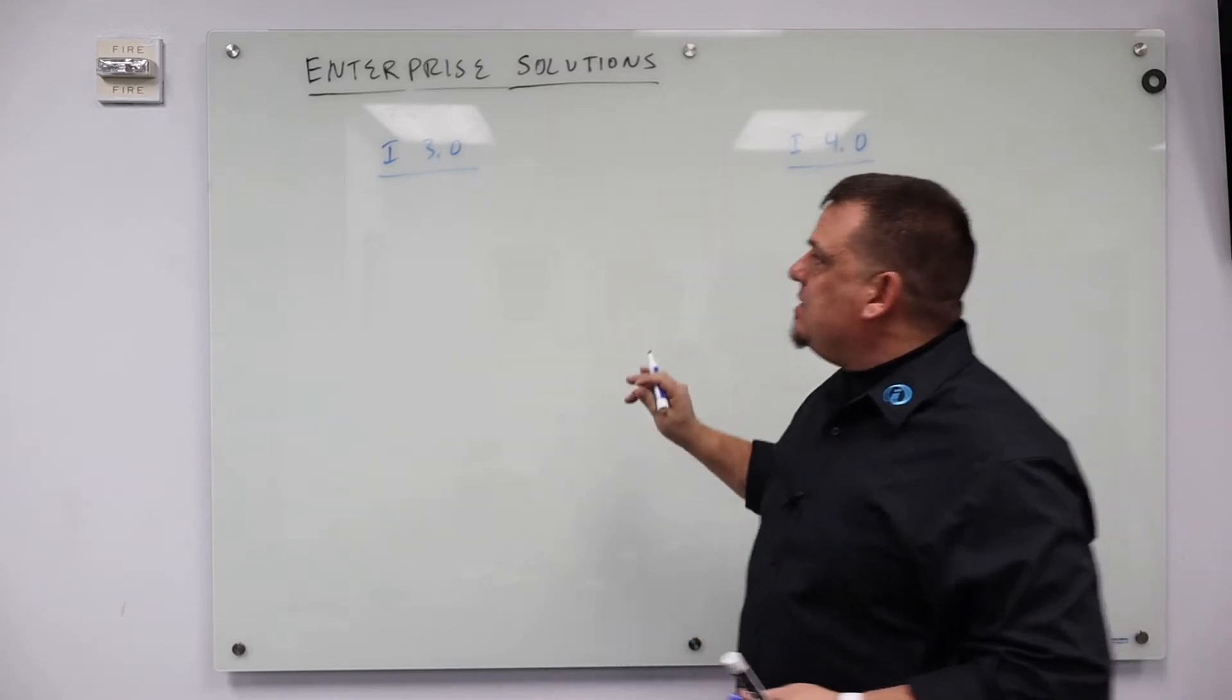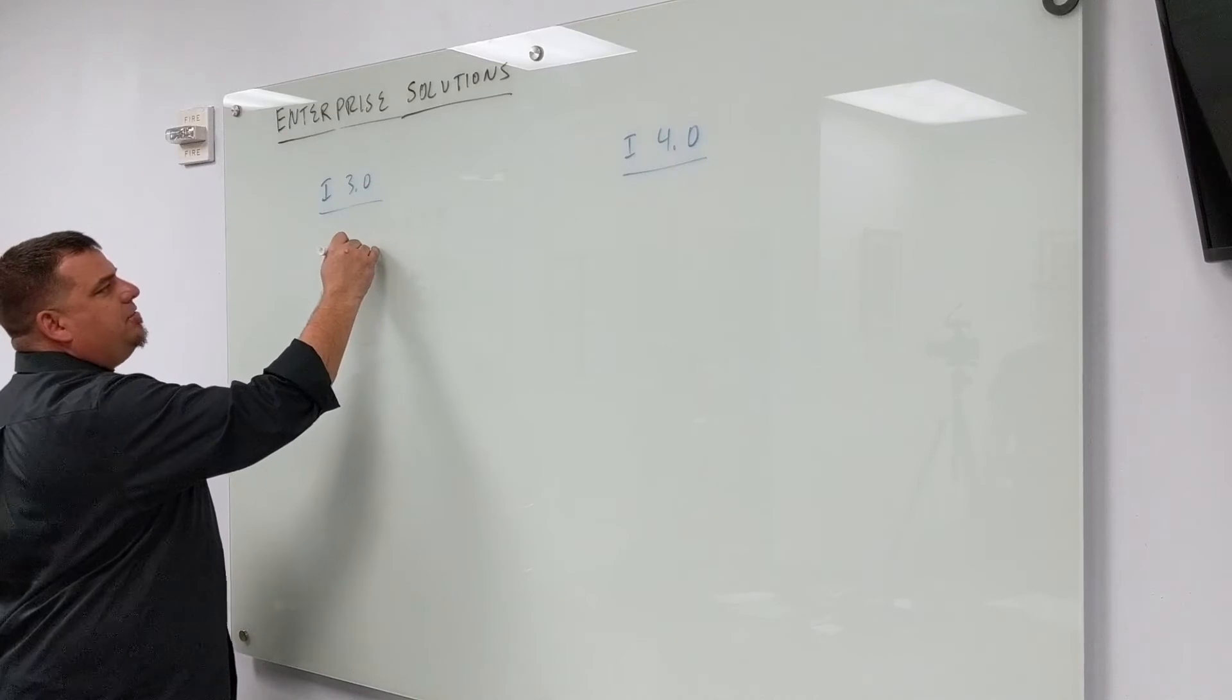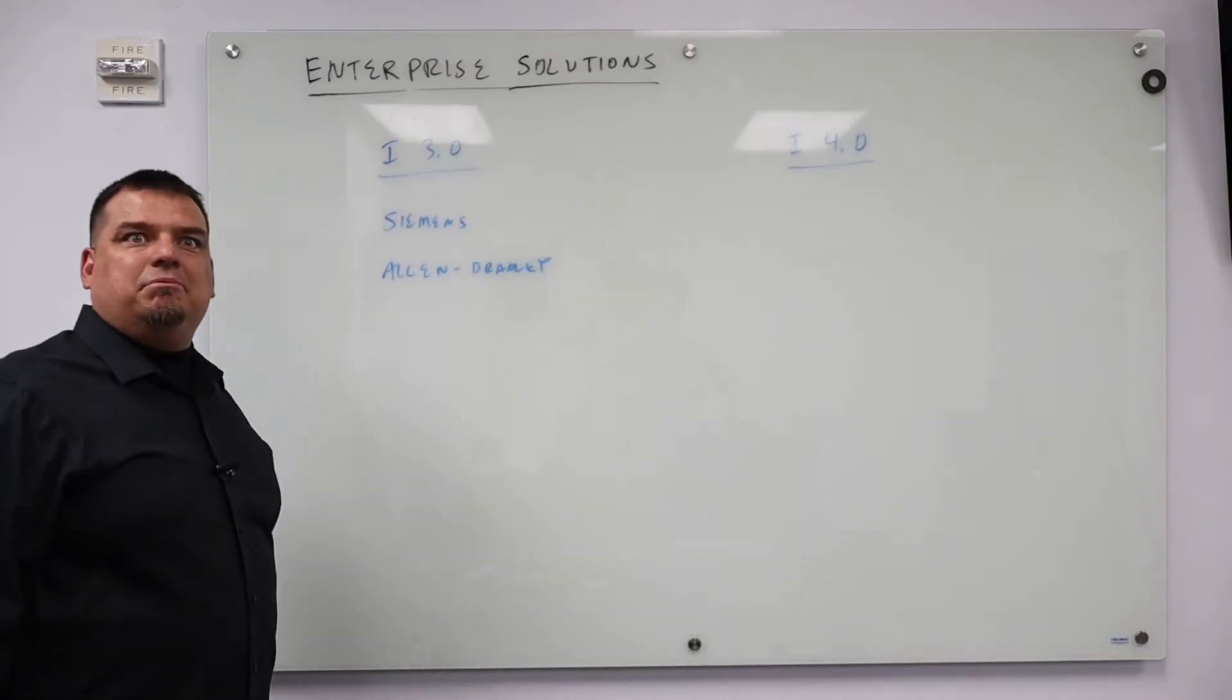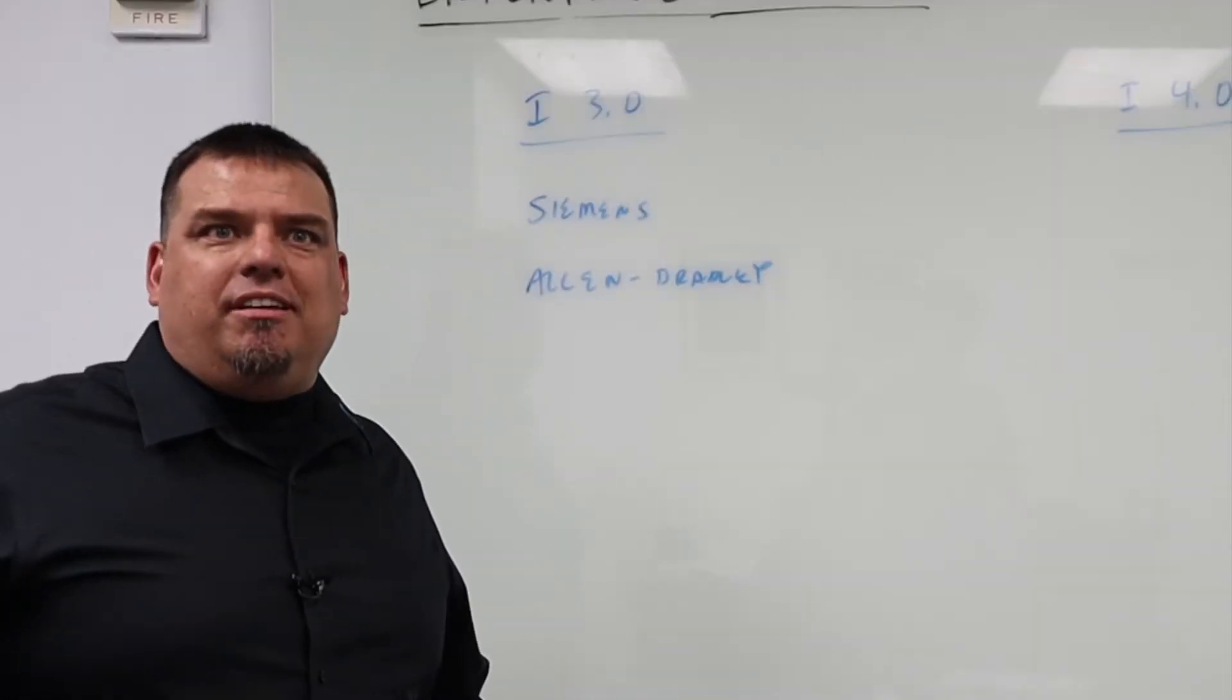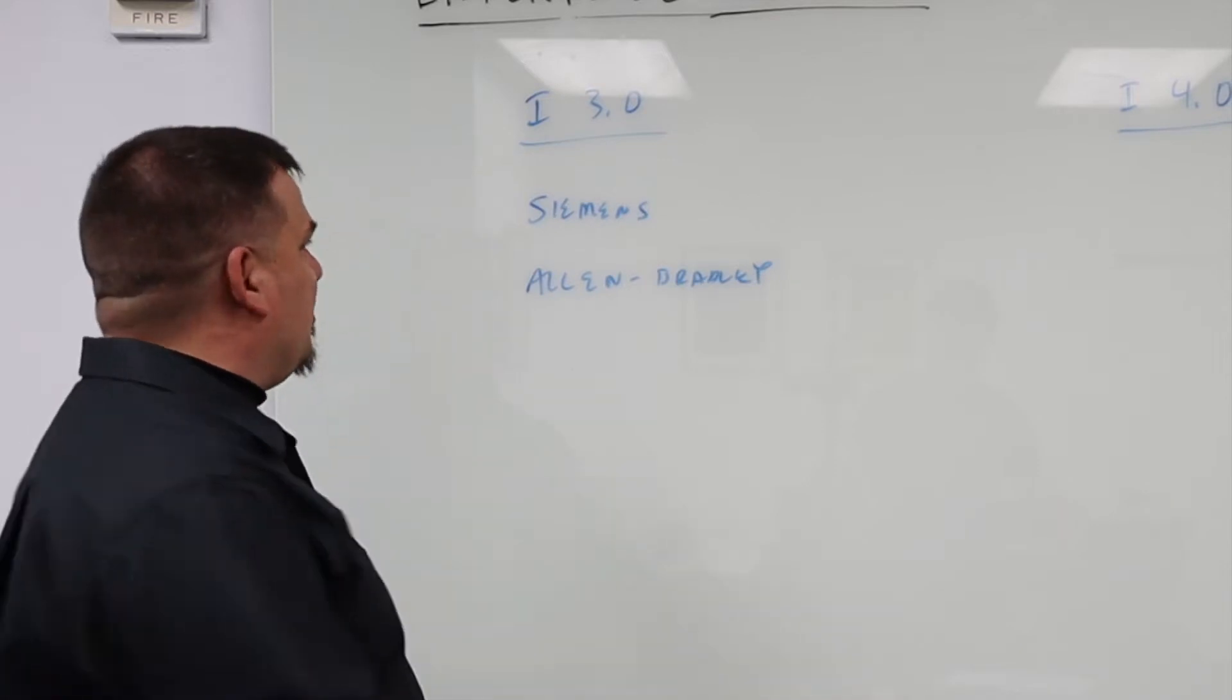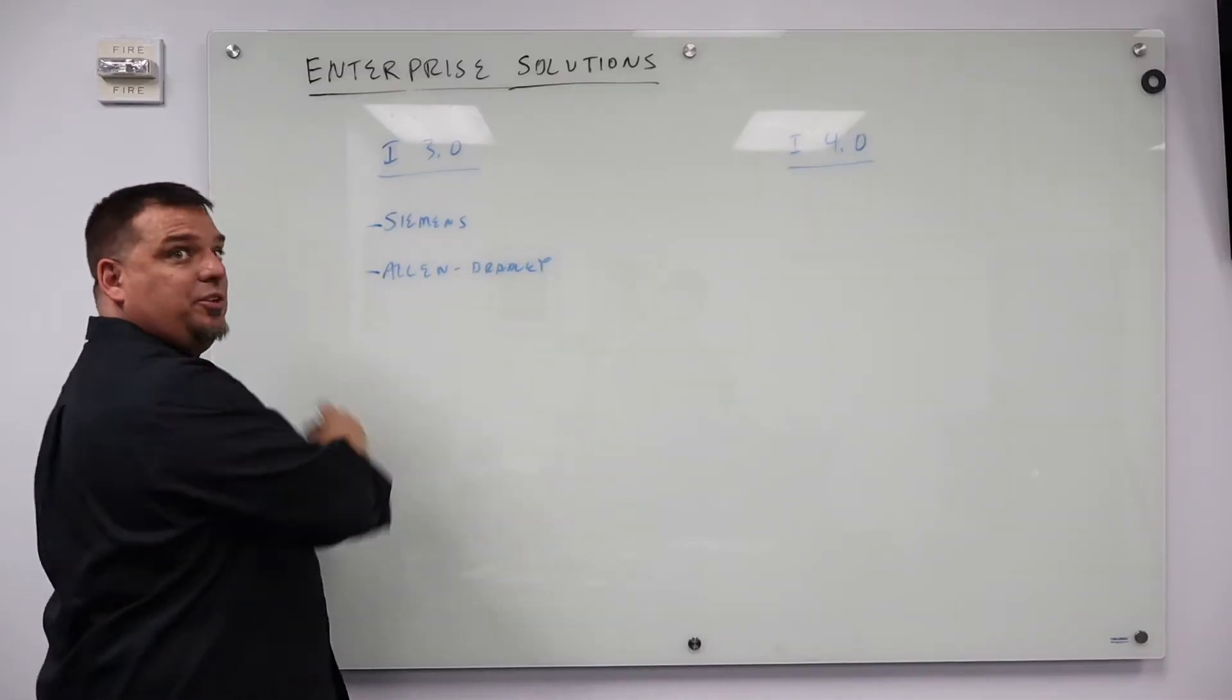But you have to understand, with the distributor of the past, it didn't really matter. You never saw a manufacturer's rep that sold Siemens and Allen Bradley. They never sell both. What's the reason? Vendor agreements. That's right, vendor agreements. The manufacturer's rep either sold Siemens or he sold Allen Bradley.